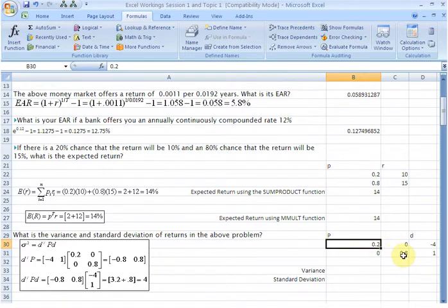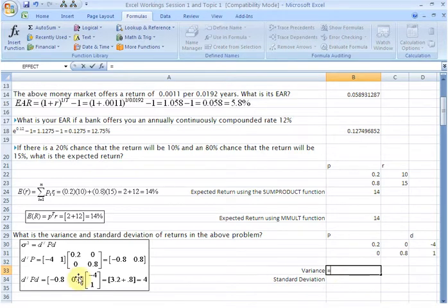is the first probability, 0.8 is the second probability, and all other elements are zero. Now we can apply this formula to get the variance of returns. Let us do that in this cell. If you look at the formula, you are going to realize that there is going to be a multiplication of three matrices here: D transpose